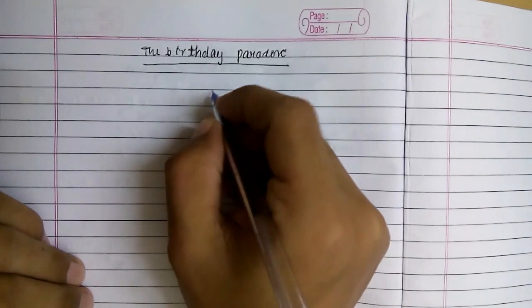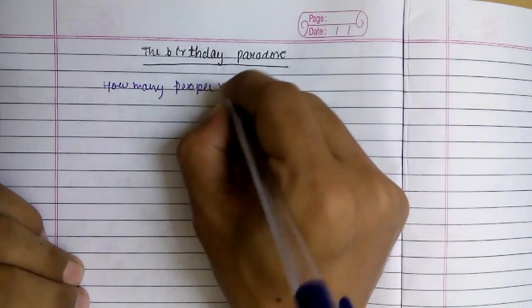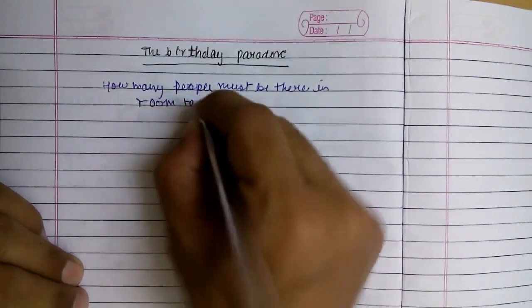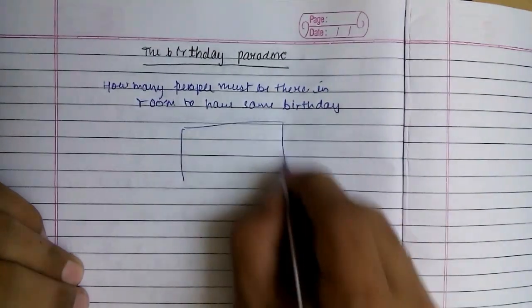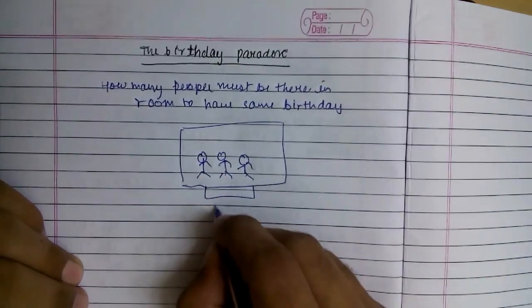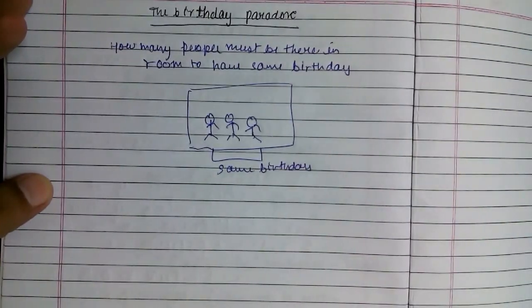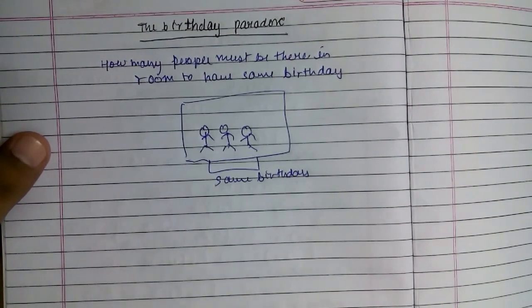So what is the birthday paradox? It is: how many people must be in a room to have the same birthday? There is a room and we will keep putting people inside it so that two of them will have the same birthday. The paradox is that you may think it requires many people, but it is actually very few. You may think the possibility will only come when there are 365 people, as there are 365 days, but it is actually really fewer people required.